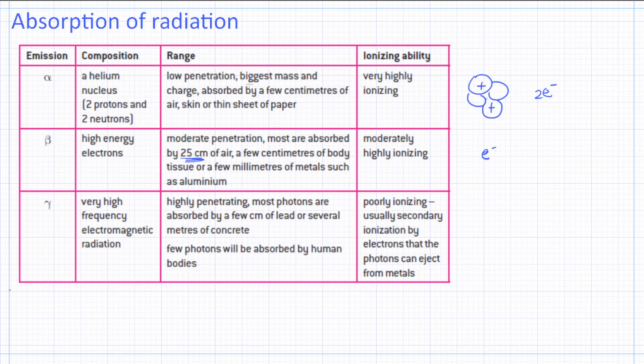Compared to our alpha particle that can be stopped by sheets of paper, here it can travel a few centimeters of tissue and even metal, just a few millimeters. But it can overcome metal, such as aluminum.